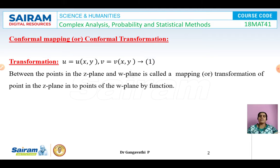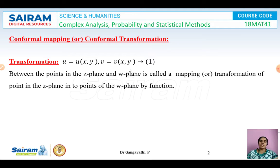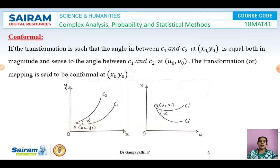A transformation is a mapping of a set of points in one plane onto a set of points in another plane. We consider u = u(x, y) and v = v(x, y). If a set of points in the z-plane and the w-plane trace out curves, we say the set of points in the z-plane has been mapped to the w-plane, and such a mapping is called a conformal transformation.